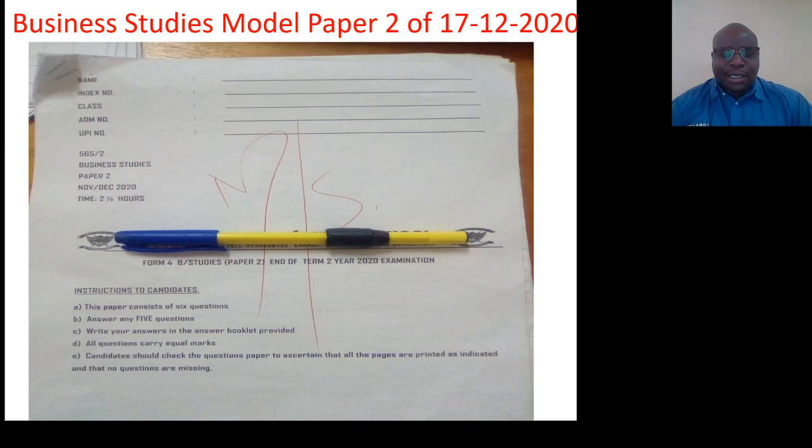So we have the details, the name, index number, class, admission number, UPI number, then Paper 2 which is coded 565, and it's usually done in two and a half hours.